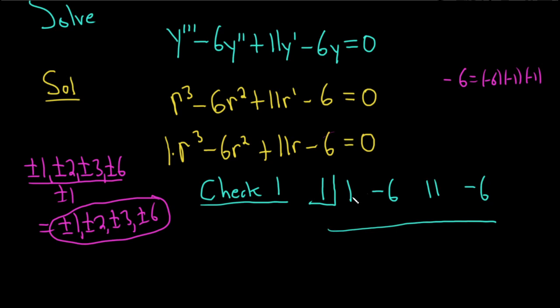So you just take this number and bring it down. Then you multiply. 1 times 1 is 1, and then you add these, and that gives you negative 5. Negative 5 times 1 is negative 5. And you add these, and that gives you 6. 6 times 1 is 6. You add these, and that gives you 0.